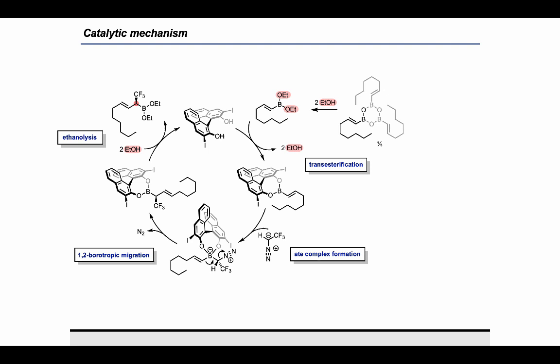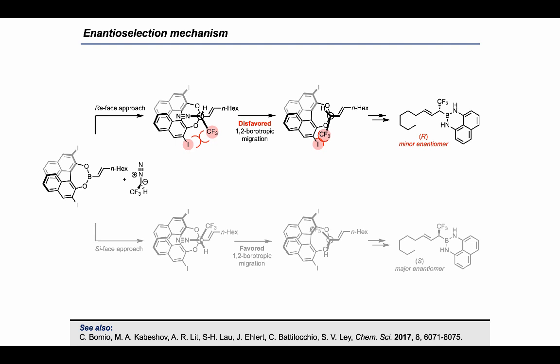My co-authors and I propose a model for the enantioselection of the borotropic migration. When the diazoethane approaches the binol ester to form the B-complex, it can do so using either of its enantiotopic faces. When the diazoethane approaches with its re-face towards the boronic ester, we propose there is a steric clash between the iodine and the CF3 group. This pathway leads towards the R enantiomer of the product, which we have experimentally observed to be the minor enantiomer. When the diazoethane approaches with its si-face, there is less steric clash and the S enantiomer is formed, which is the major enantiomer. For the migration to occur, it is necessary for the N2 leaving group and the migrating olefin to be anti-periplanar. This anti-periplanar orientation has also been found by the research group of Leigh in a previous report of a racemic 1,2-borotropic migration.